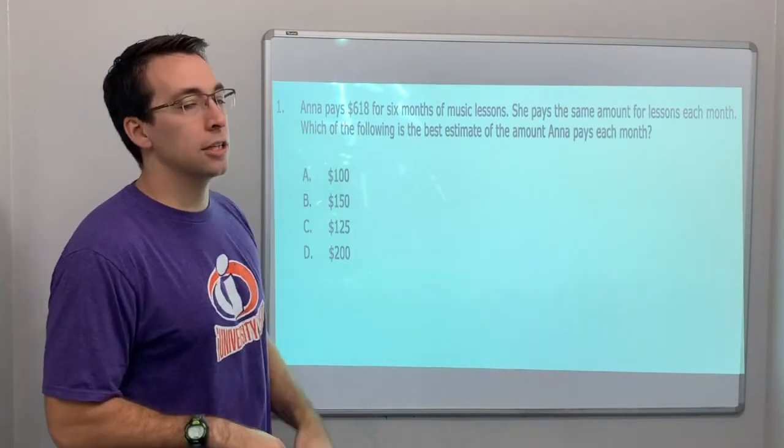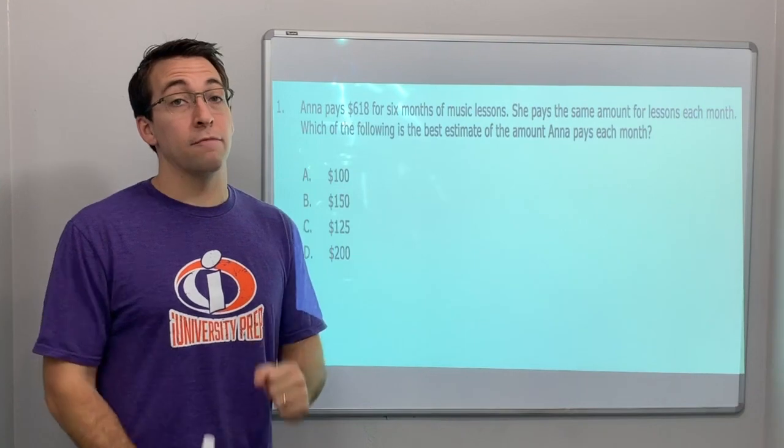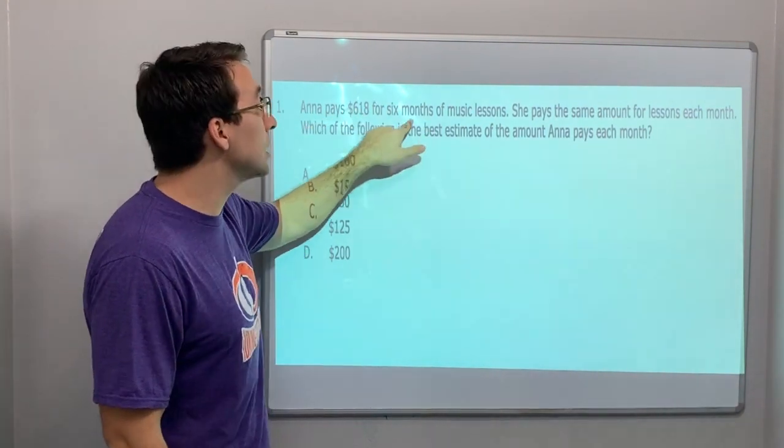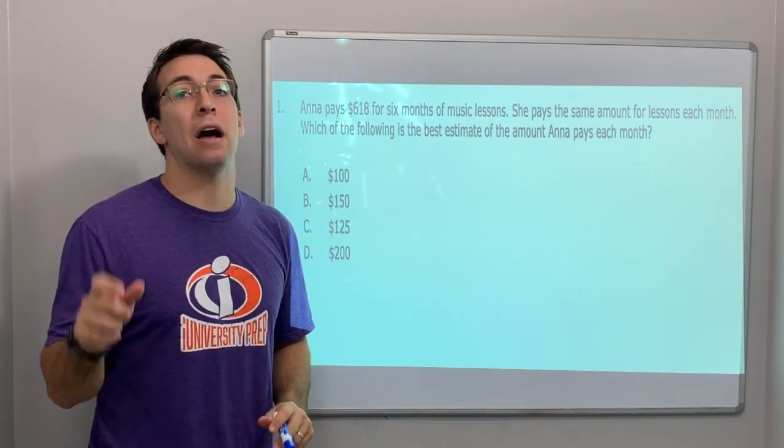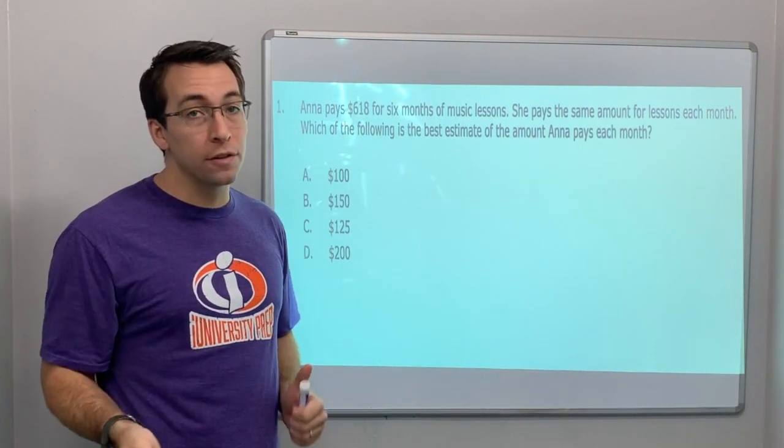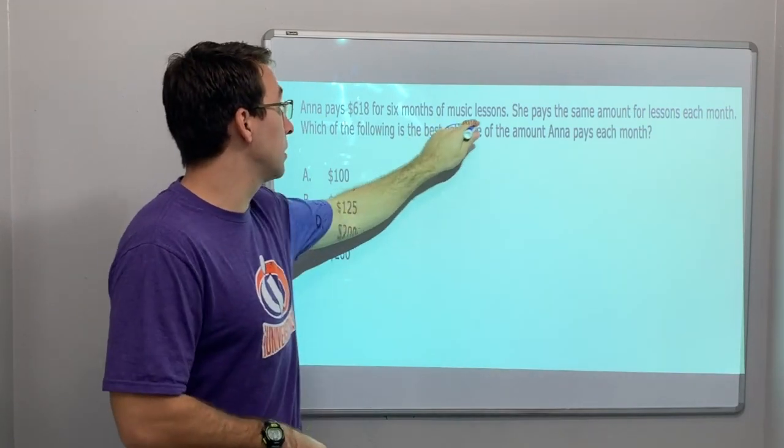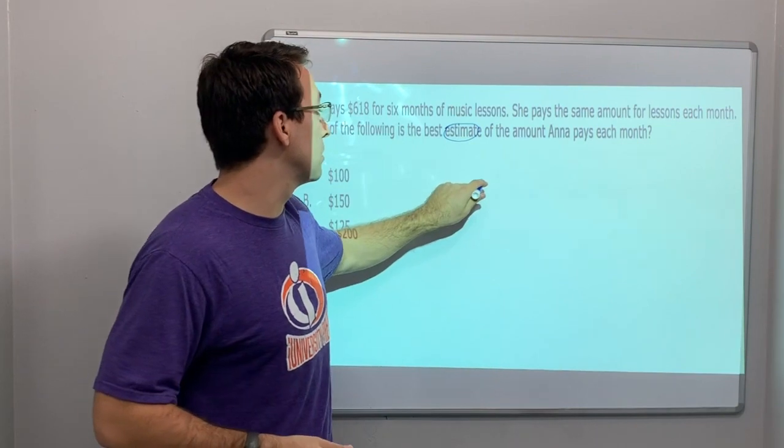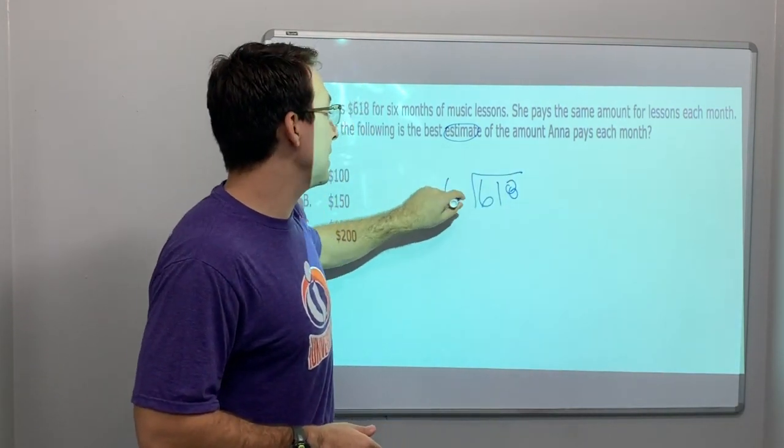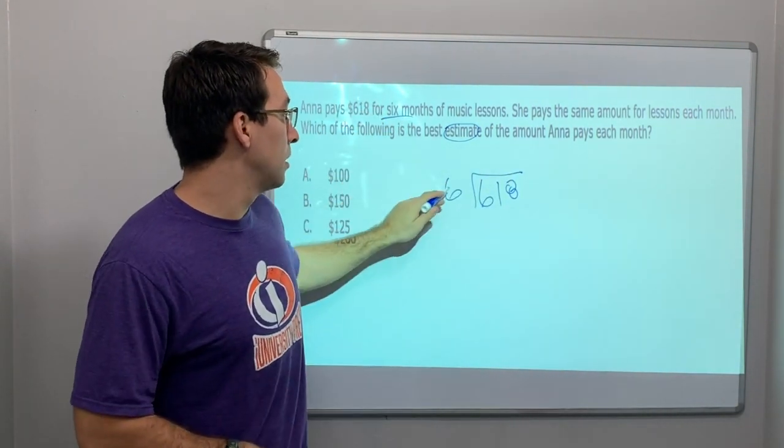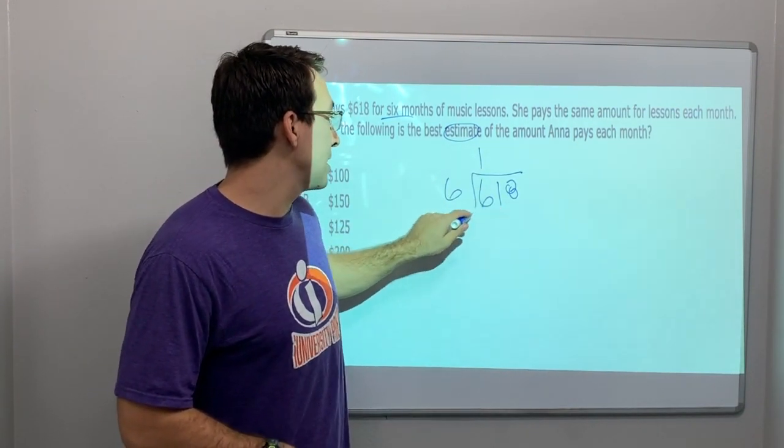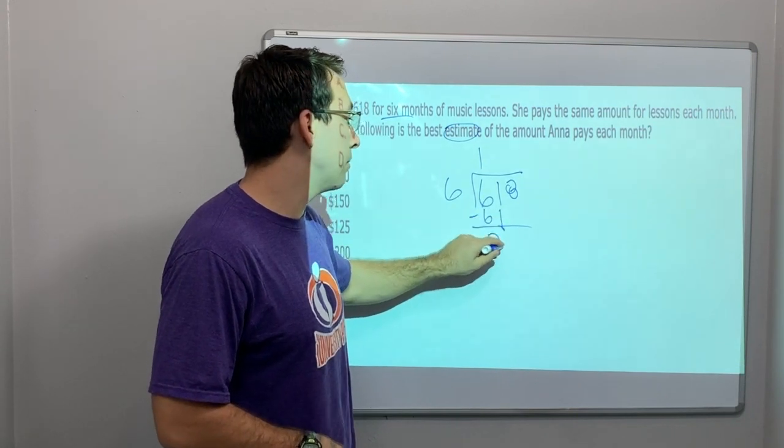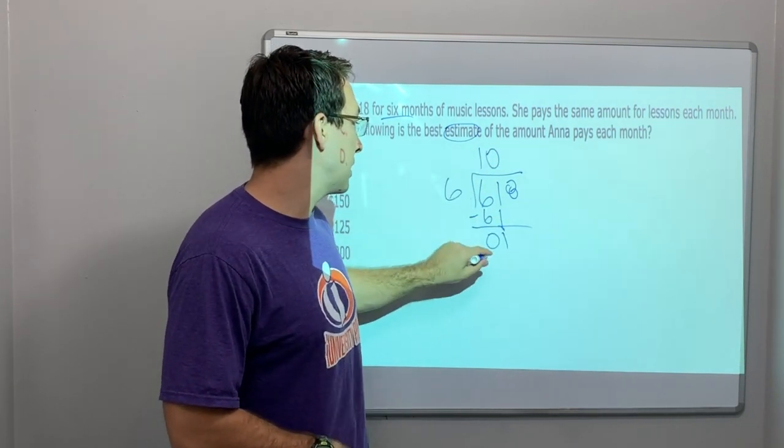Number one: Anit pays $618 for six months of music lessons. She pays the same amount for each lesson. Which of the following is the best estimate of the amount Anit pays each month? Well let's do this: 618 divided by 6, because there's six months, right? One times six is six, subtract that, drop the one, that's zero. Zero times six is zero, subtract that one, drop our eighteen.